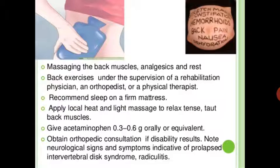Sleep on a firm mattress; apply local heat and light massage to relax taut back muscles. Give acetaminophen 0.3 to 0.6 grams orally or equivalent. Obtain an orthopedic consultant if disability results. Note neurological signs and symptoms indicative of prolapsed intervertebral disc syndrome or radiculitis.